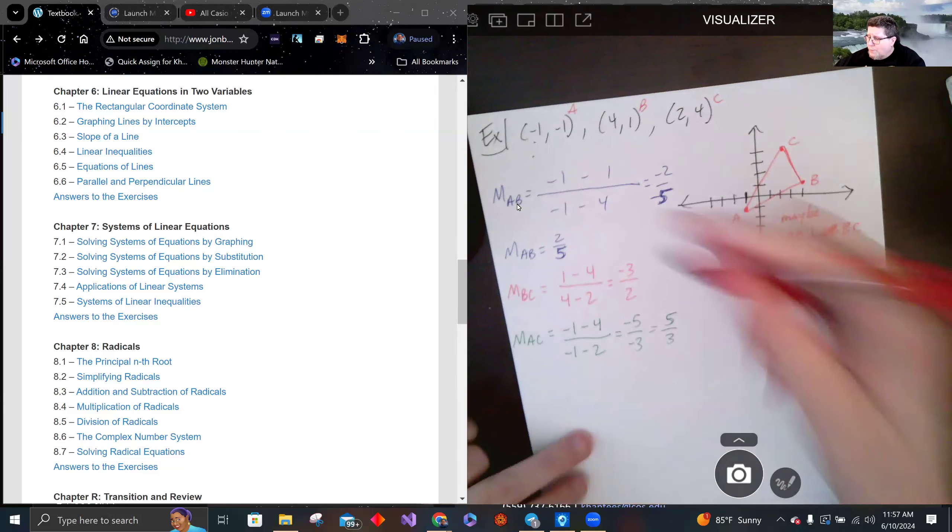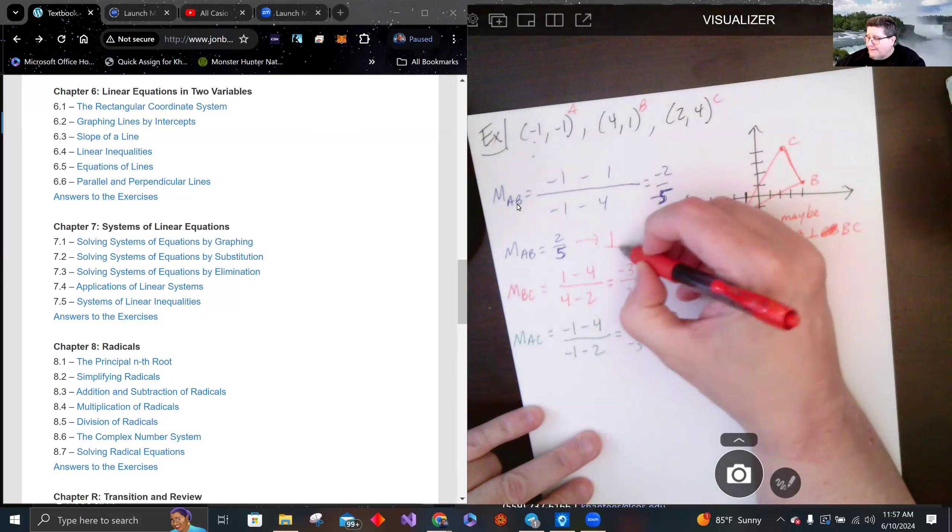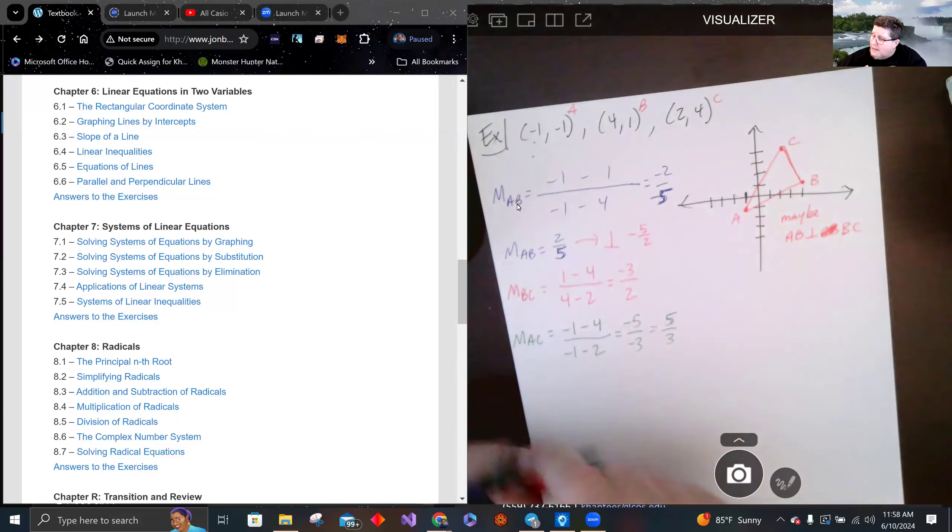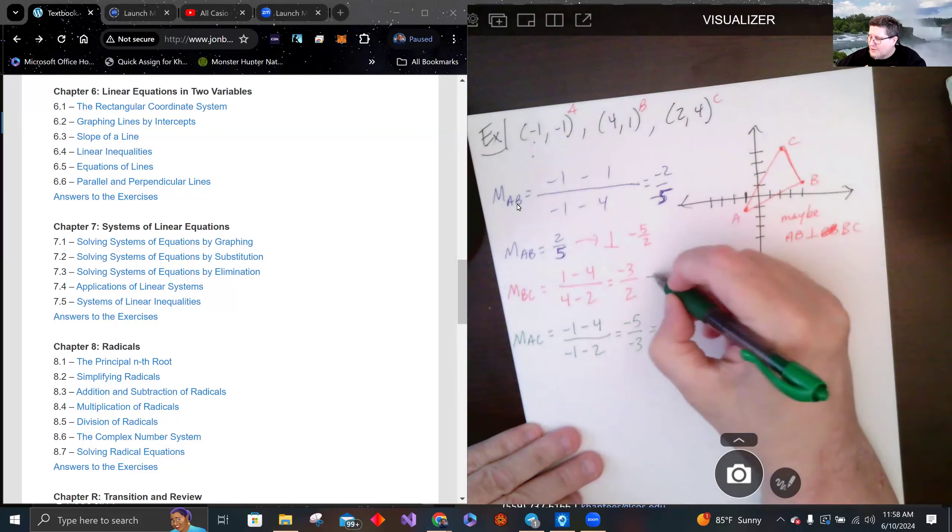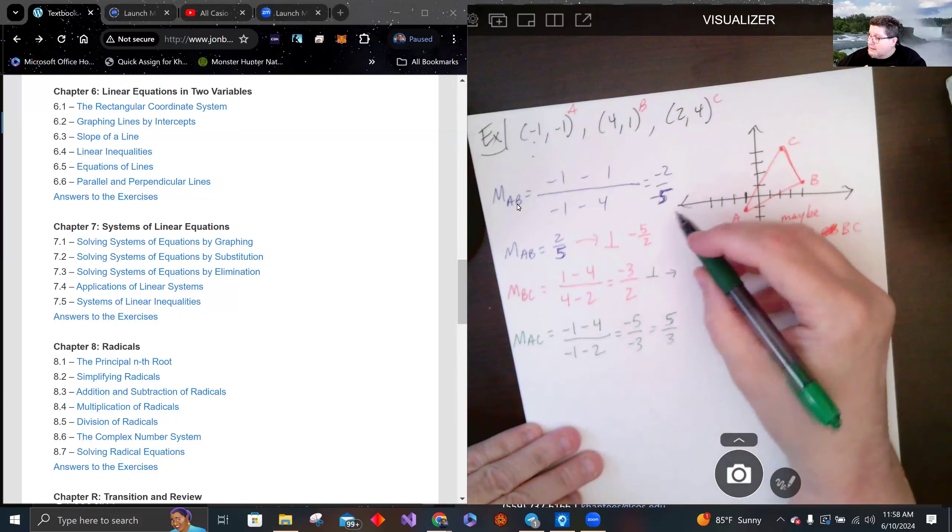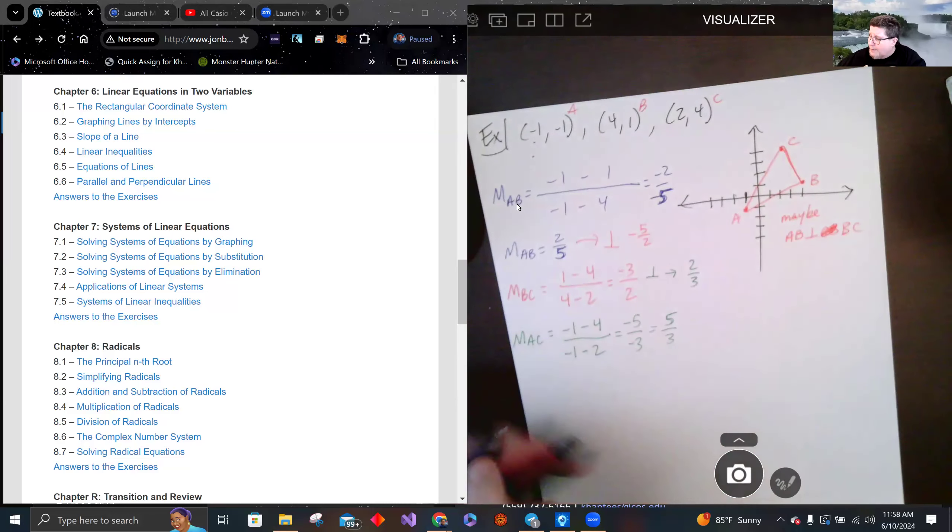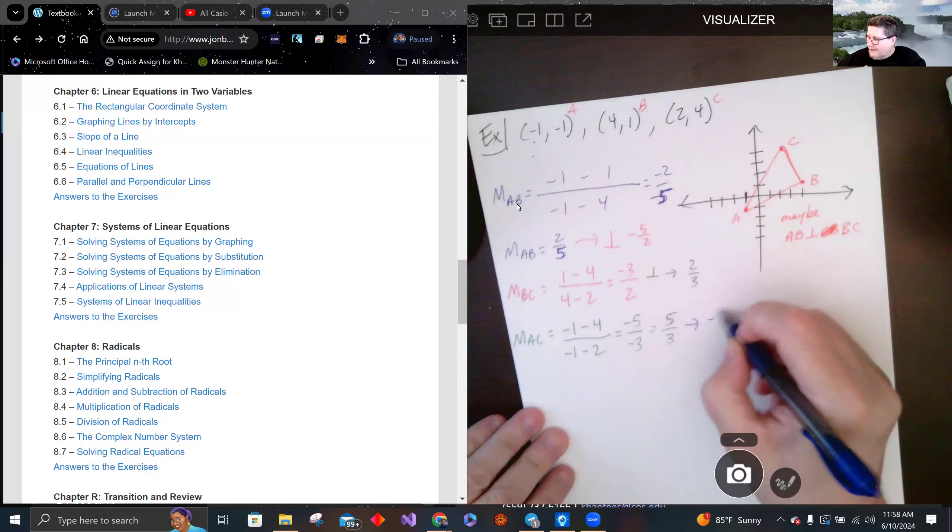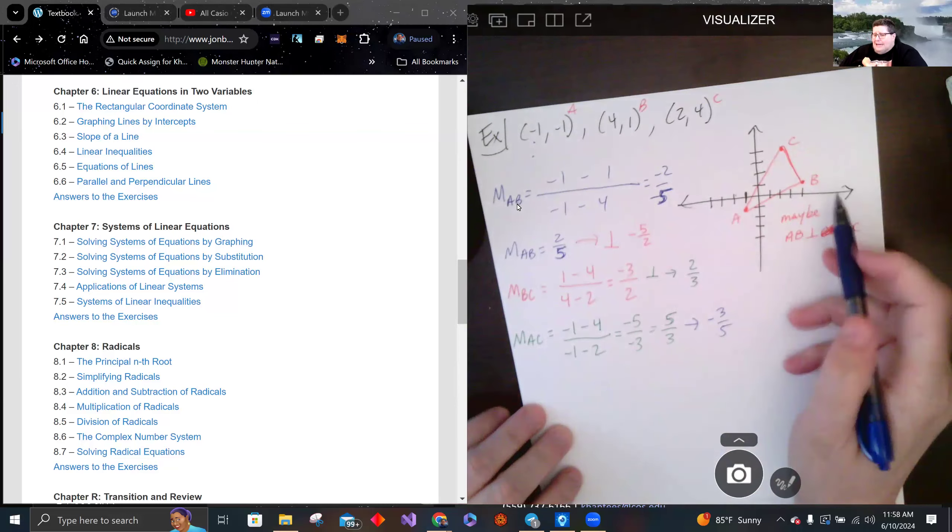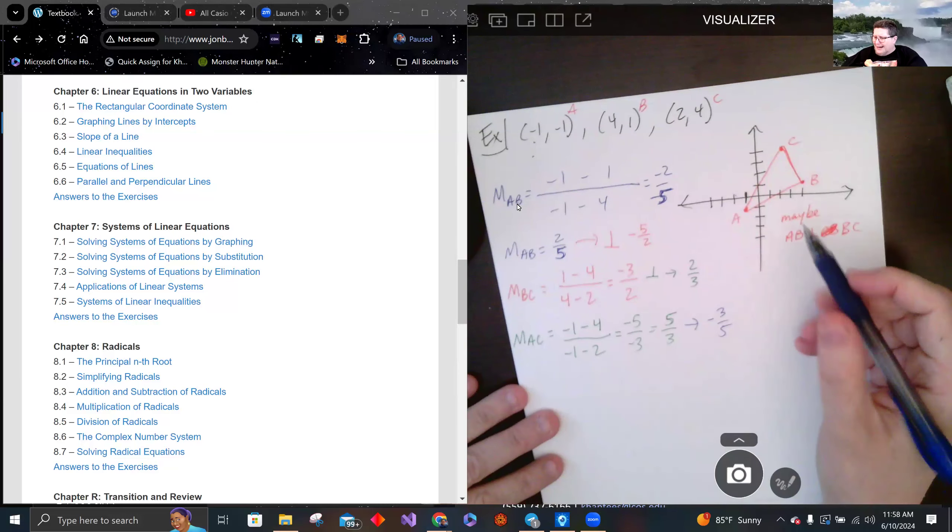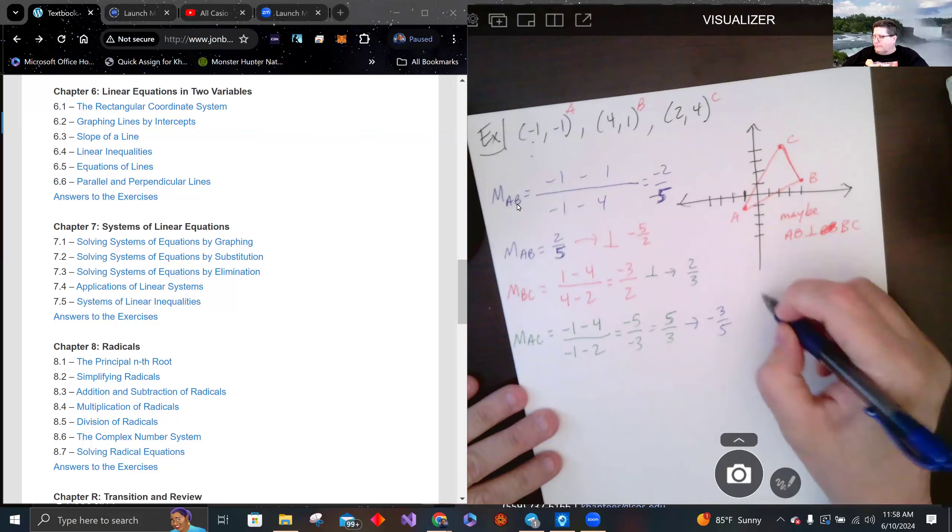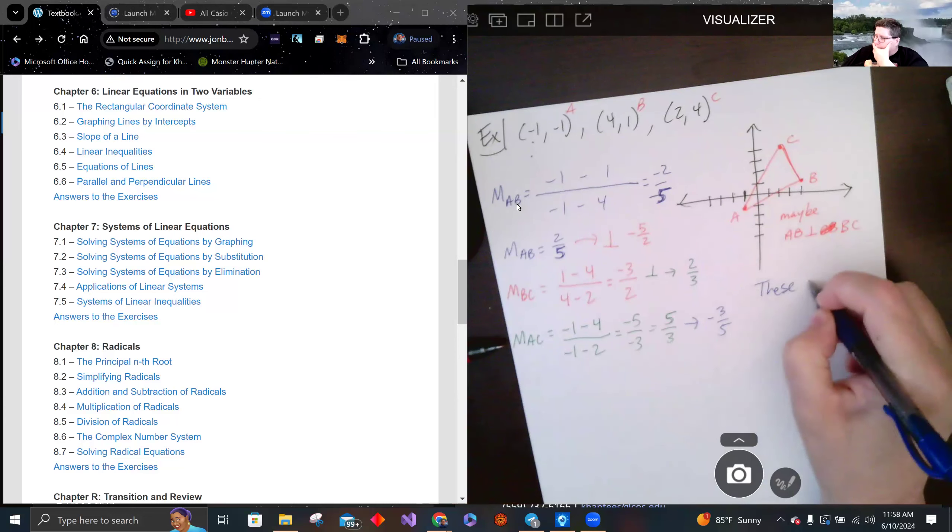So the perpendicular to this would be -5/2, the perpendicular to this would be 2/3, and perpendicular to this would be -3/5. AB and BC look perpendicular, but they're not. This is not a right triangle.